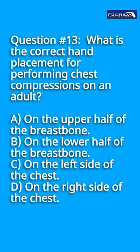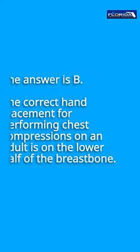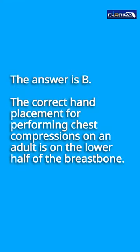Question number 13: What is the correct hand placement for performing chest compressions on an adult? A. On the upper half of the breastbone. B. On the lower half of the breastbone. C. On the left side of the chest. D. On the right side of the chest. The answer is B. The correct hand placement for performing chest compressions on an adult is on the lower half of the breastbone.